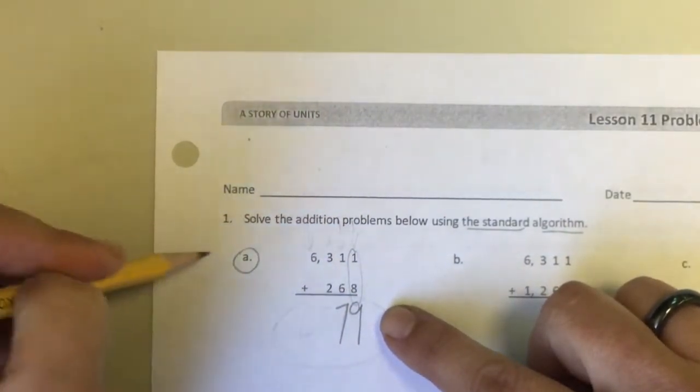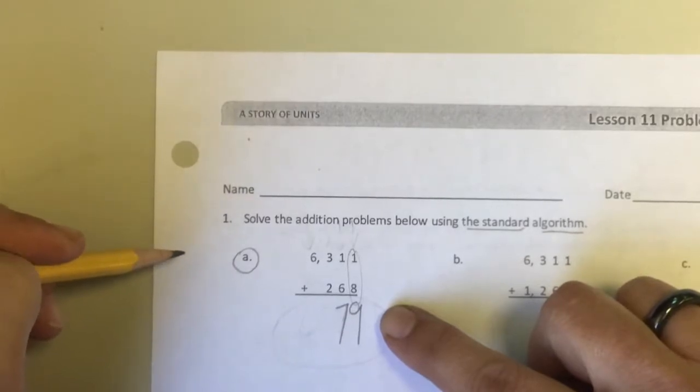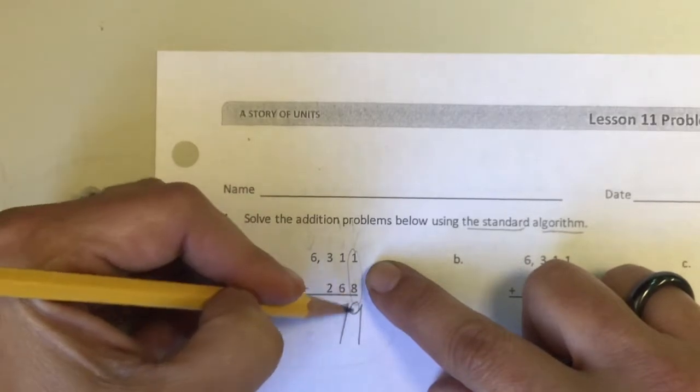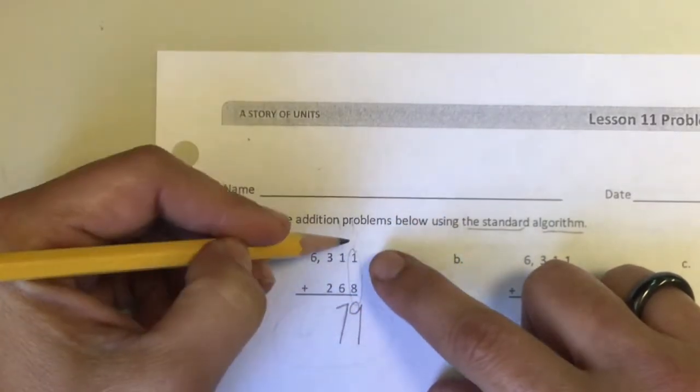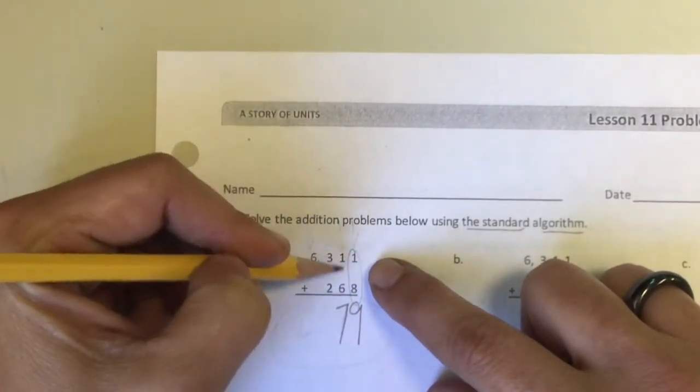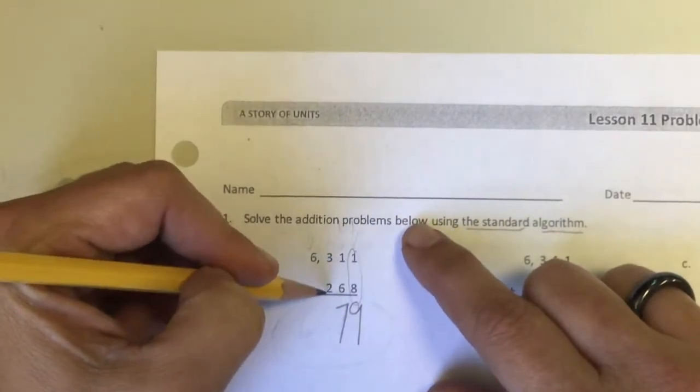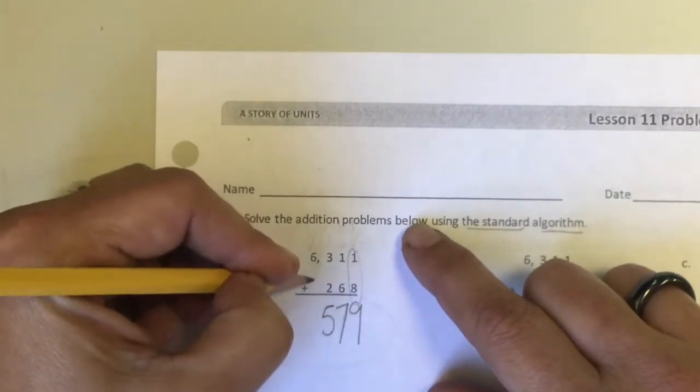So I am already starting, I'm thinking 1 plus 8 is 9, then I want to move to the tens place, 1 plus 6 is 7, 3 plus 2 is 5, and then 6 plus 0 is 6.